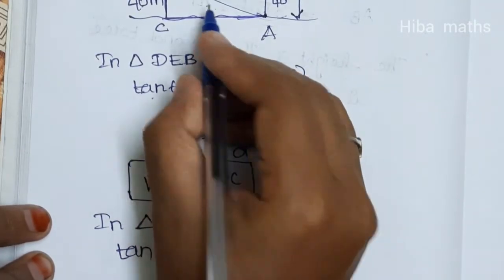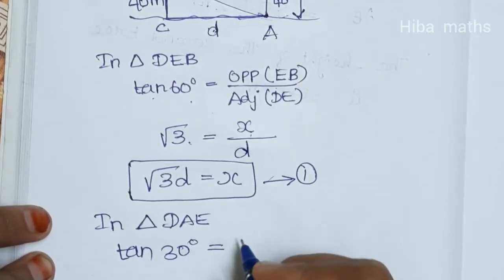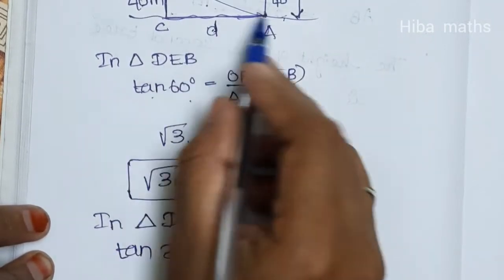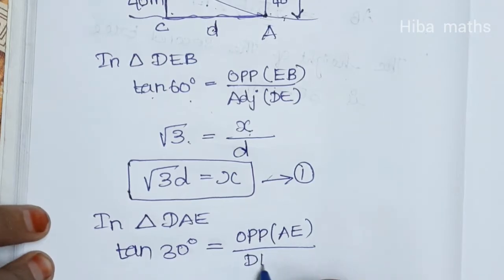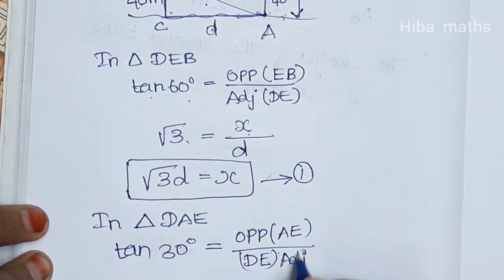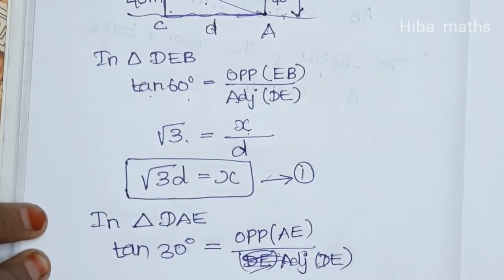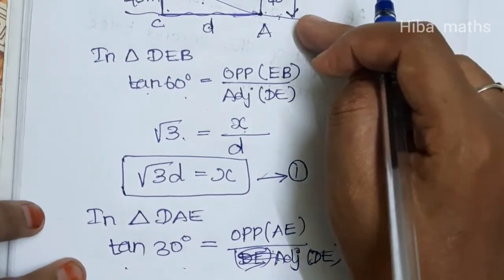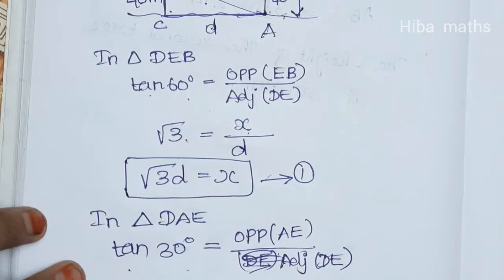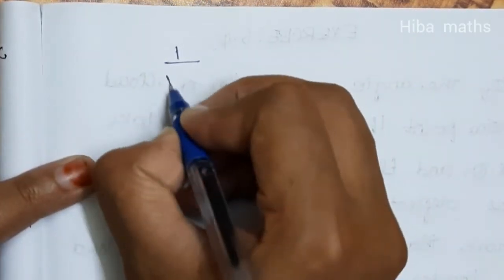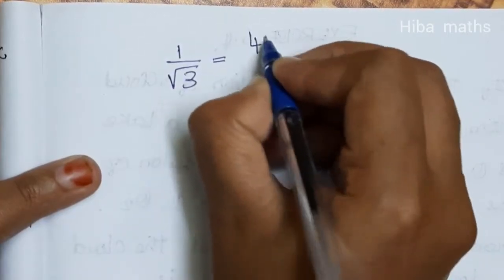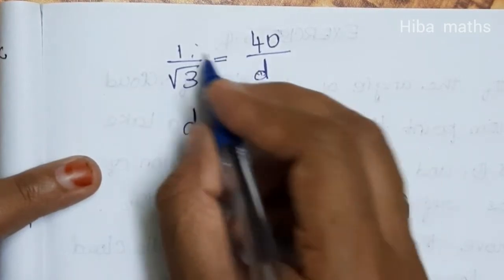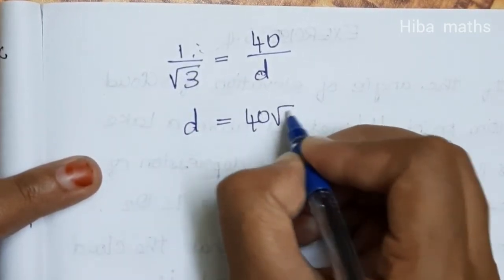Now for the depression angle, tan 30 degrees is equal to opposite over adjacent, where opposite is AE equal to 40 and adjacent is DE. Tan 30 equals 1 over root 3, so 1 over root 3 equals 40 over D. Cross multiplying gives D equals 40 root 3.